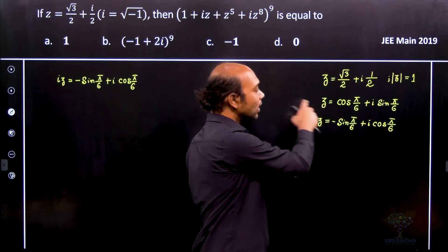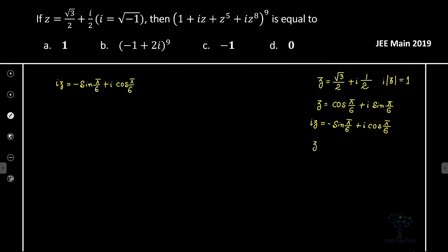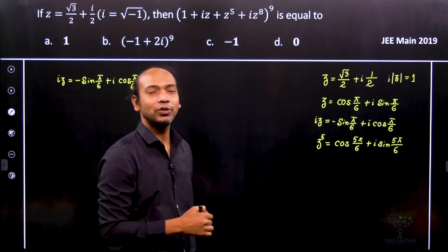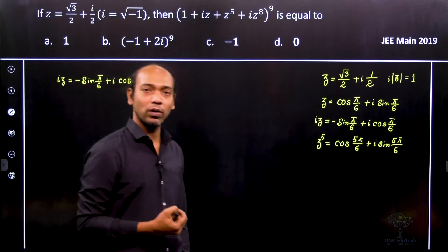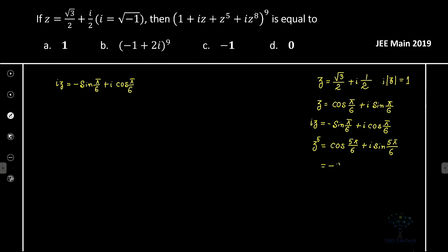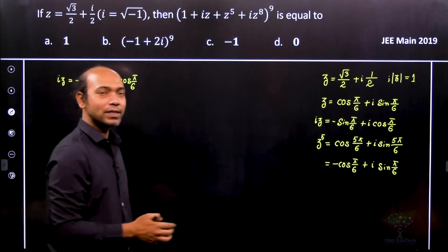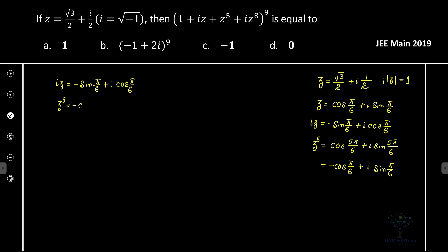Now we calculate z to the power 5. By De Moivre's theorem, since 5 is an integer, z⁵ = cos(5π/6) + i·sin(5π/6). Now 5π/6 = π − π/6, which lies in the second quadrant where cosine is negative and sine is positive. Therefore z⁵ = −cos(π/6) + i·sin(π/6).